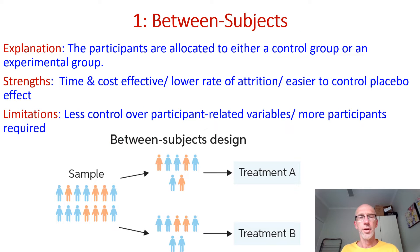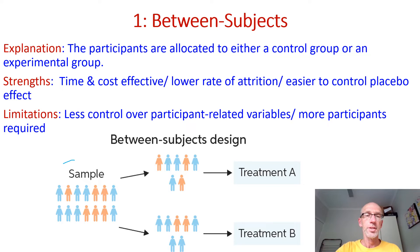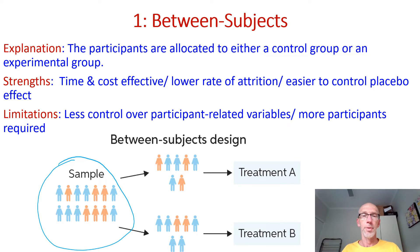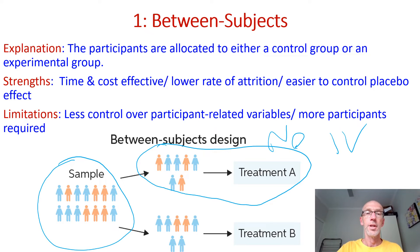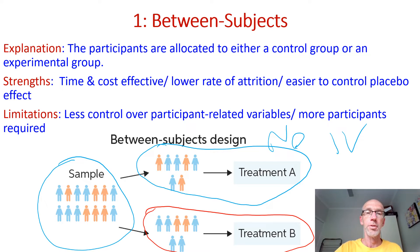We have three options in the VCE course. Number one is the between-subjects design, where we have a sample of participants. Ideally they will be randomly allocated to either a control condition — a group not exposed to the IV — and then the other half will be randomly allocated to the experimental condition, where they will be exposed to the IV.